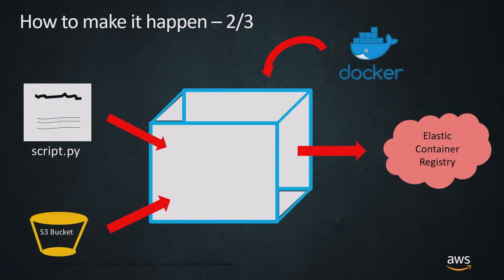The second step is getting our code into a Docker container. If we're using a built-in algorithm, we don't have to worry about this. But if we're using other algorithms that people enjoy writing, we're going to want to get that into a Docker container. The way that works is you'll take your script and your S3 location, point to both of those in your Dockerfile, and then register that Dockerfile on ECR. You can also avoid Docker when you're utilizing script mode.